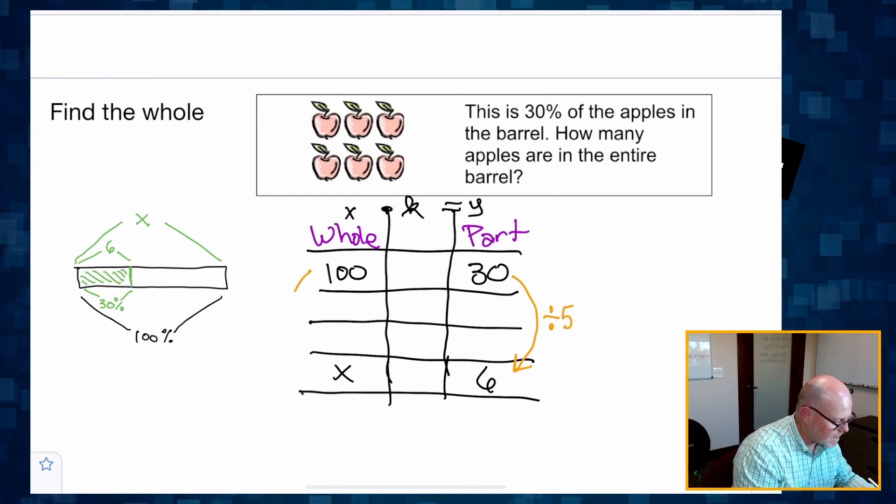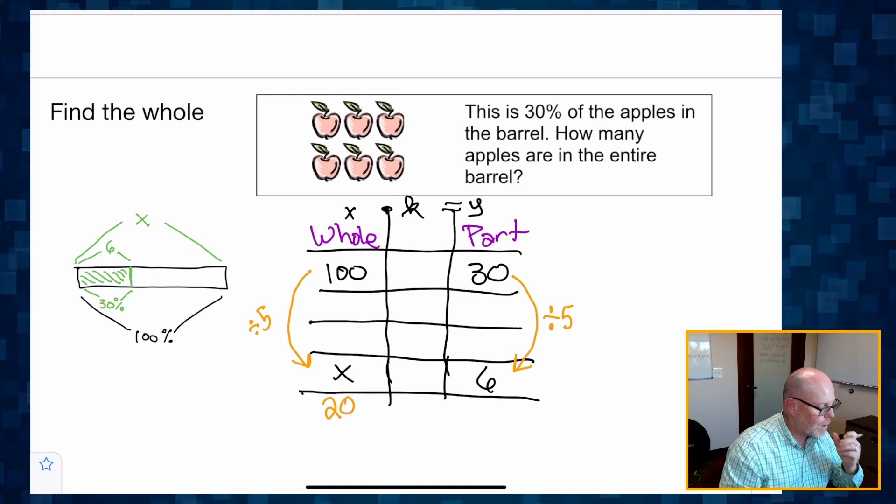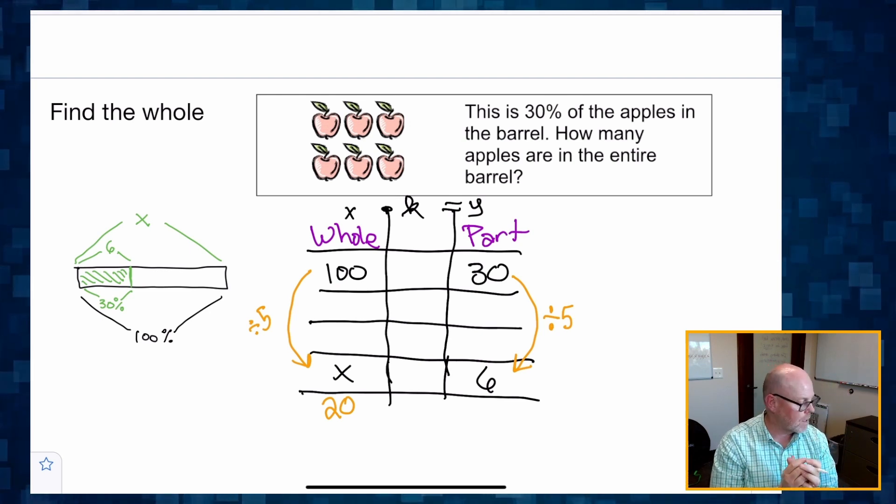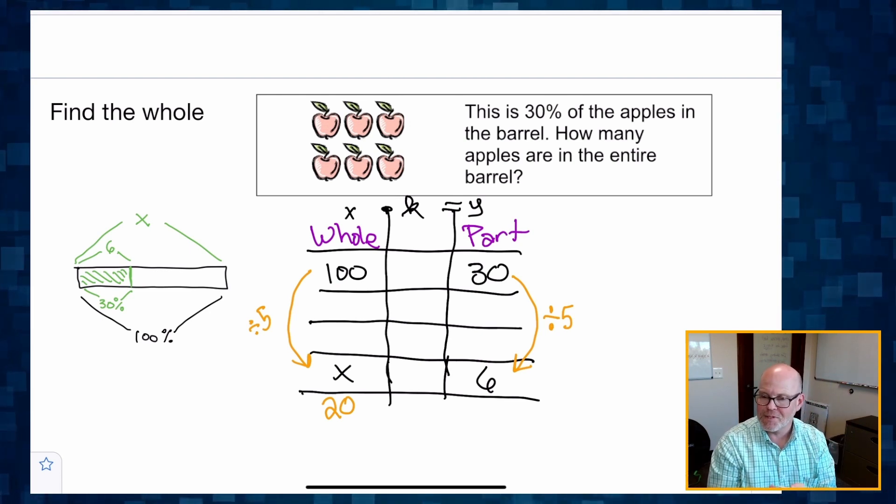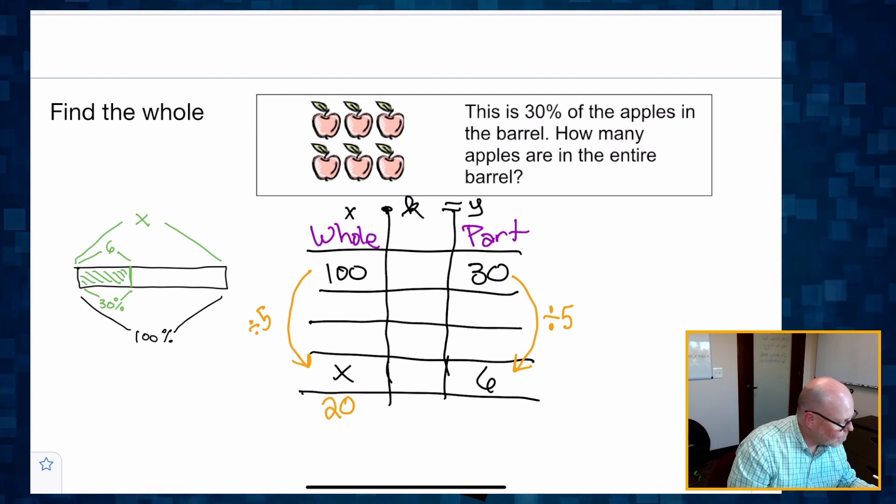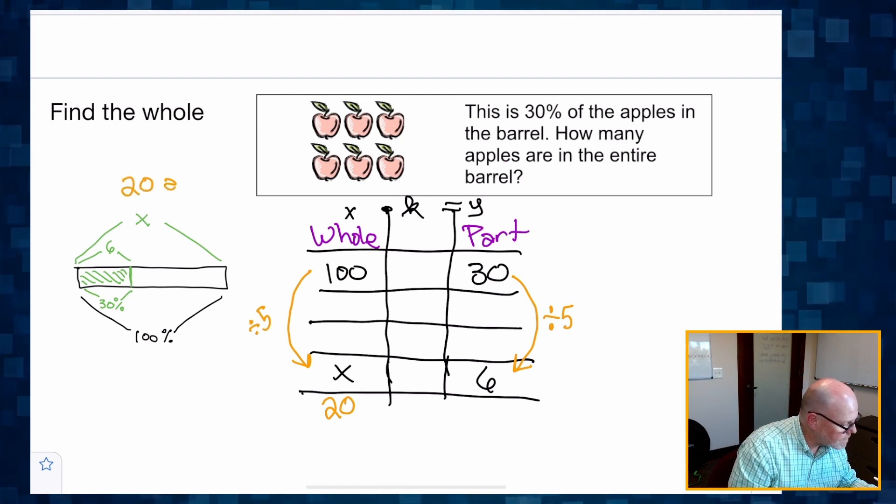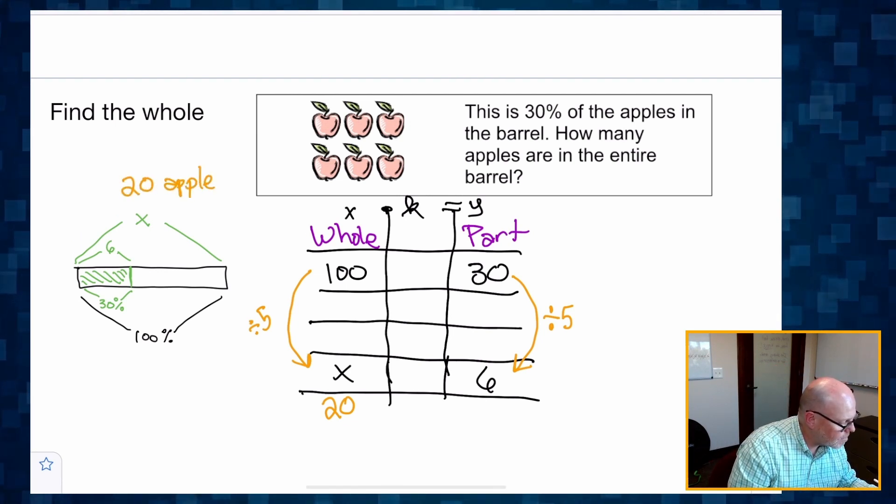Automatically, that means a hundred divided by five gives me 20. So we now know that there are 20 apples, 20 apples in the entire barrel.